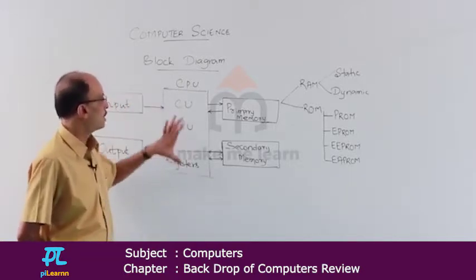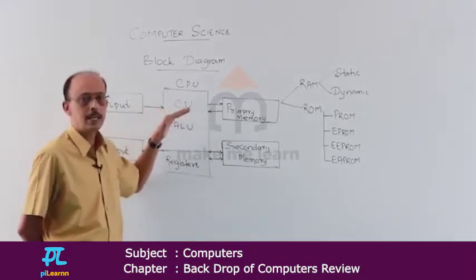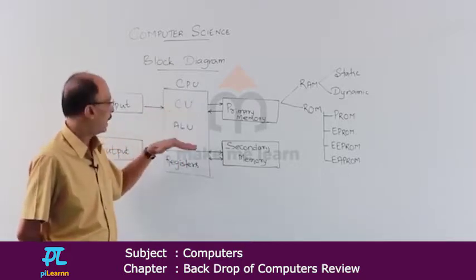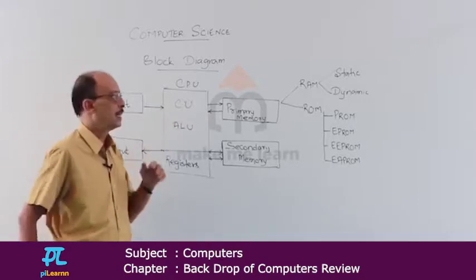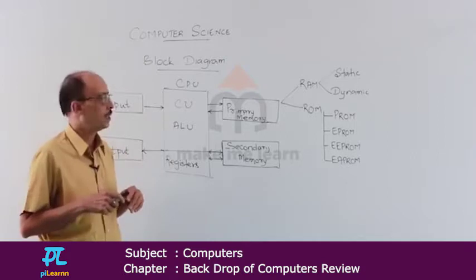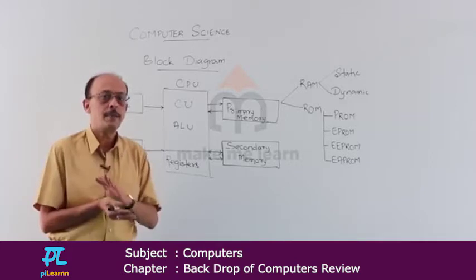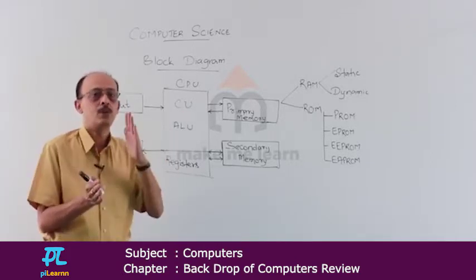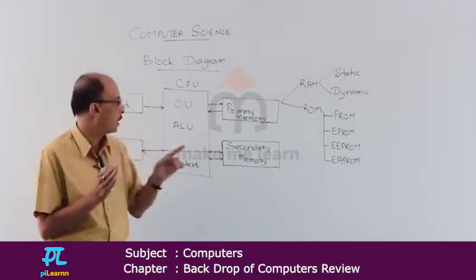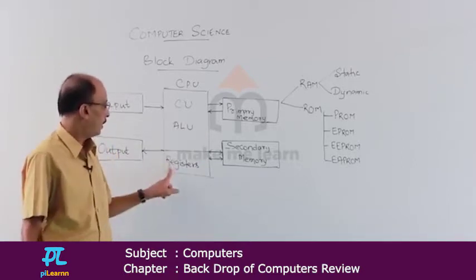Coming back to the CPU: the control unit controls and coordinates all activities in the system. The arithmetic logic unit performs arithmetic operations like addition, subtraction, multiplication, division, exponentiation, and remainder operations. The logical unit is for decision making — for example, whether the first value is greater than the second value, or whether two values are equal. Such comparison operations are handled by the logical unit.